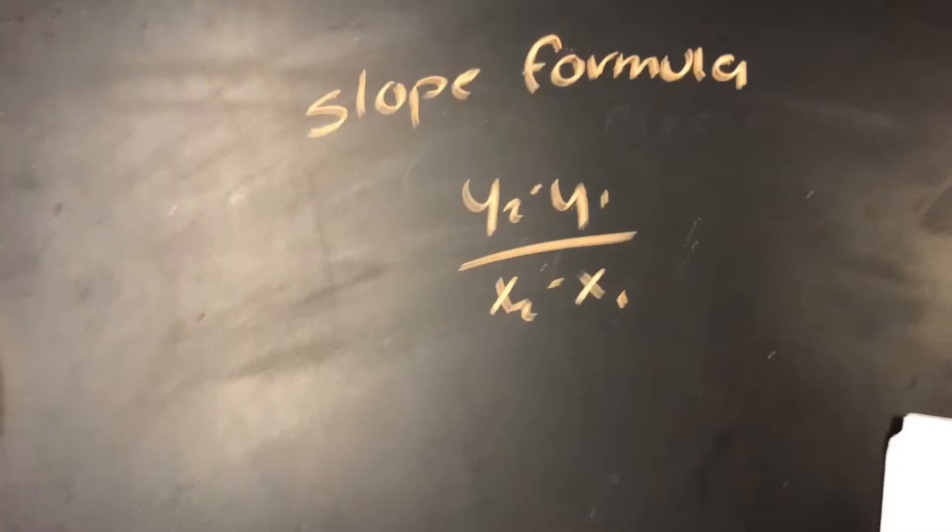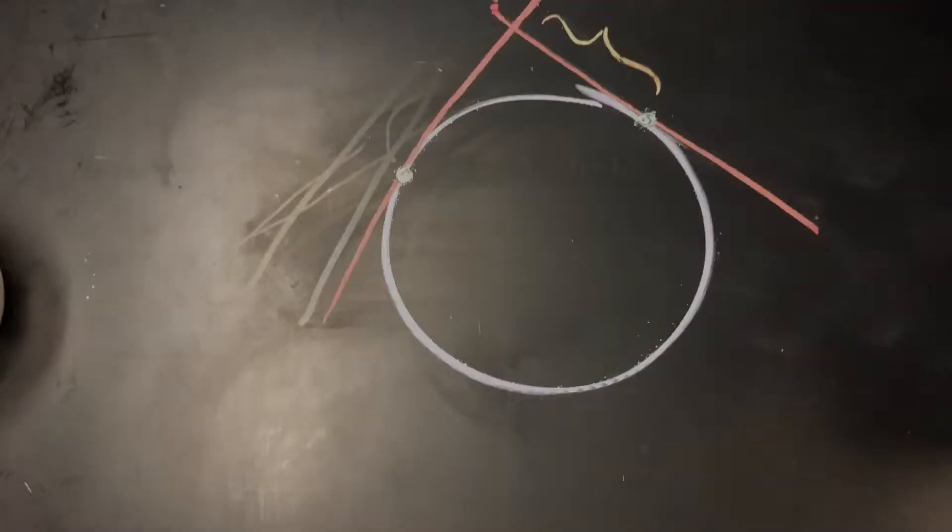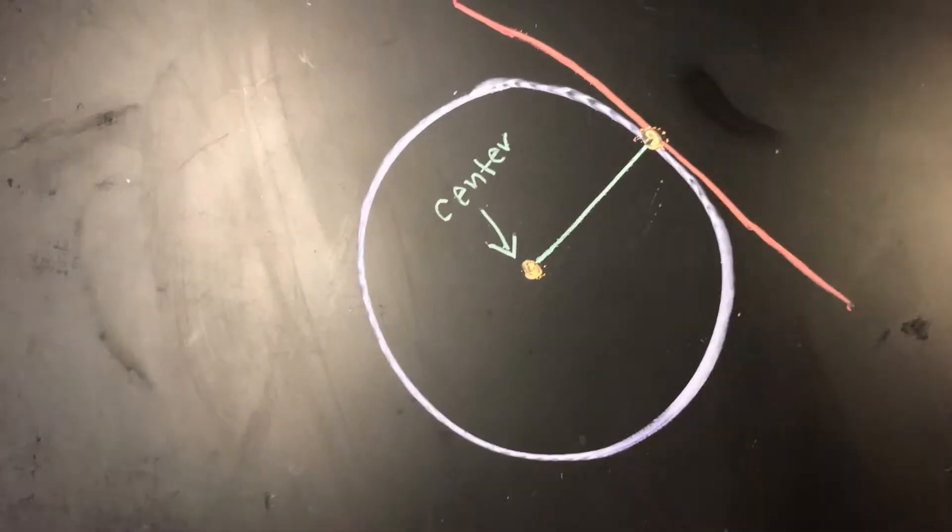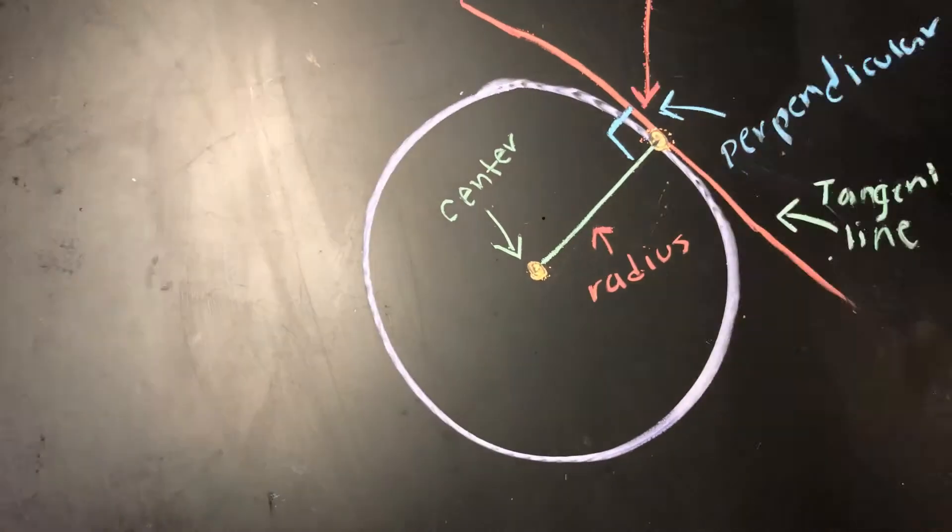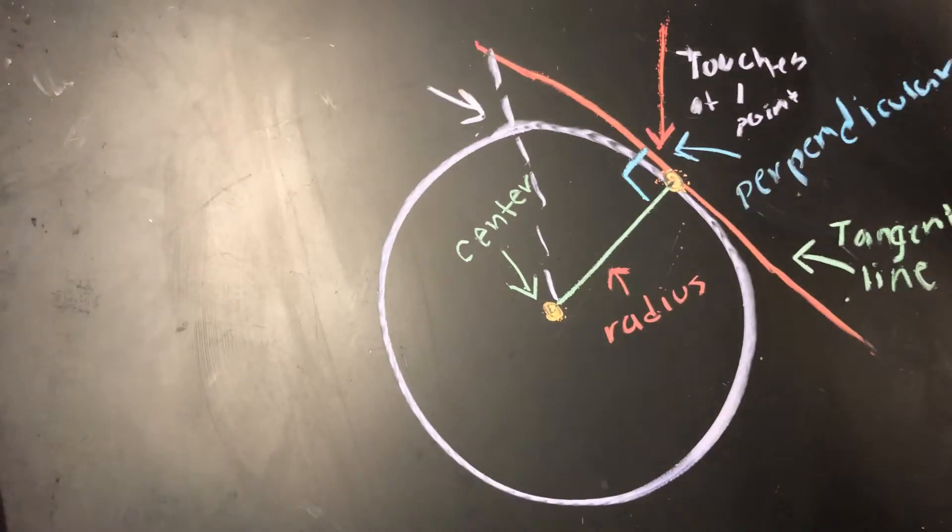Because tangent lines are perpendicular to the radius, the slope of the tangent line is opposite the slope of the radius, in which the fraction is flipped and the sign is reversed.